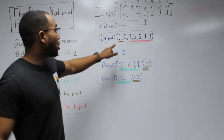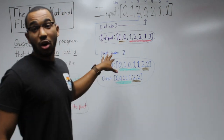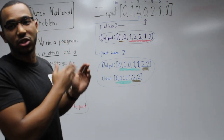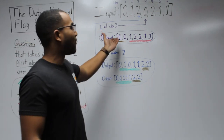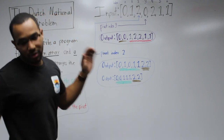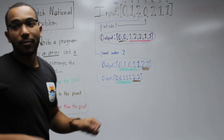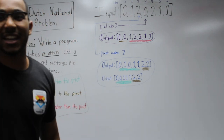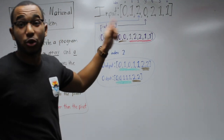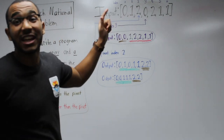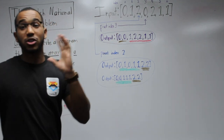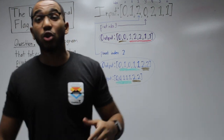If this zero is on the left of the array, all items greater than it must be to the right, so we're only going to have one color and then the rest. Let's do another example: let's pick pivot index two, which holds the value two.